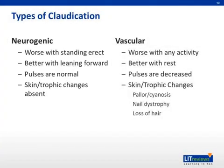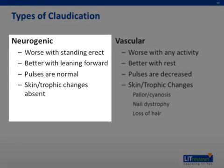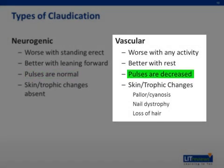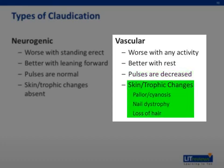If the diagnosis is still unclear based on the history, there are some other clues to look for on physical exam. With neurogenic claudication, the distal pulses will likely be intact in the lower extremities. While in vascular claudication, the pulses are either absent or often diminished. Patients with vascular claudication often display evidence of impaired blood flow, such as skin pallor, nail changes, and decreased hair growth.